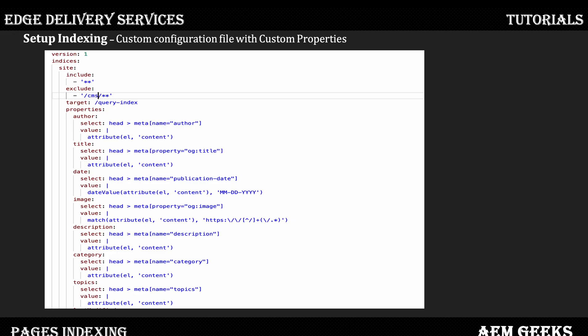You can have any name for the section — it's just an indicator or name of your section. The important thing is 'include'. You have to define here what pages or what path you want to include. You can use a pattern like double-star to include everything. 'Exclude' works like a rejection: if you want to exclude any pages or paths from the included ones, you add them here. You can add a simple path, a regex, or multiple values. 'Target' is important — this defines where your file is present. So if I mention slash query-index, that means my file is present in the root folder. This path is relative to your content directory.